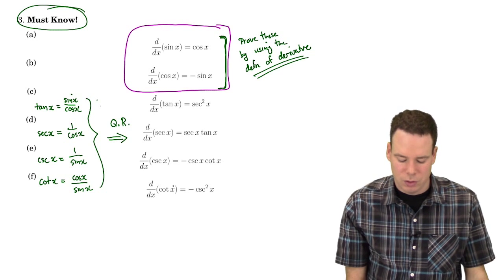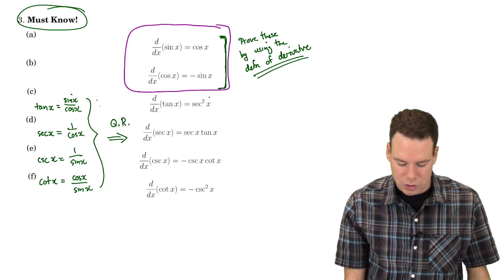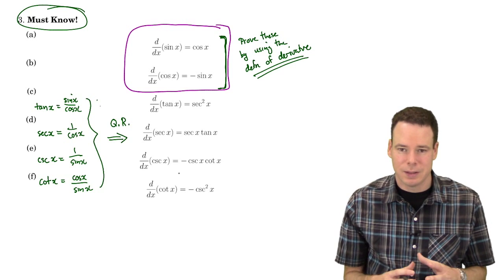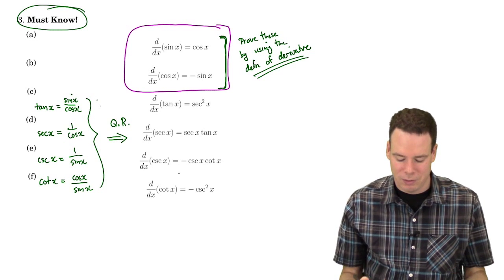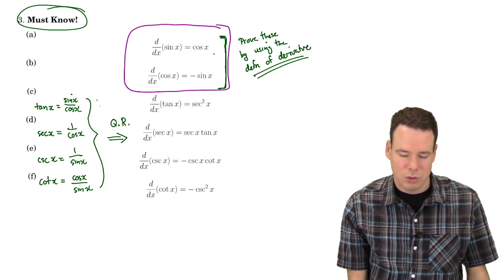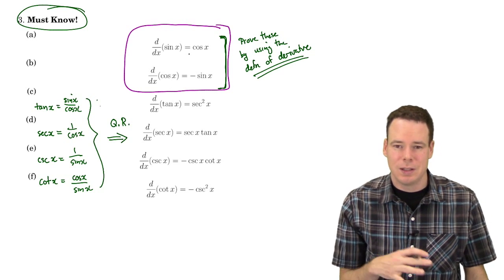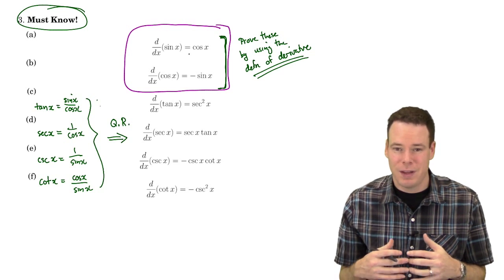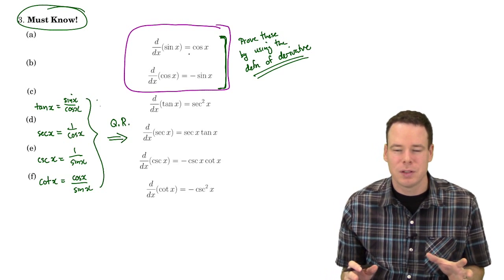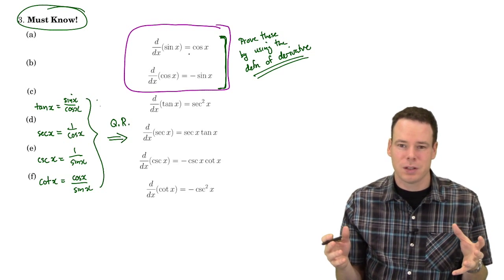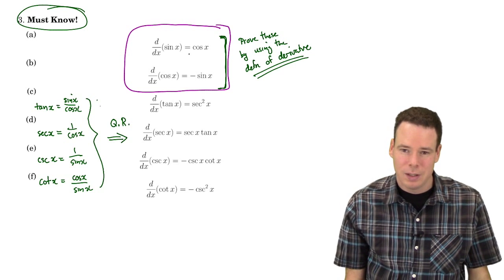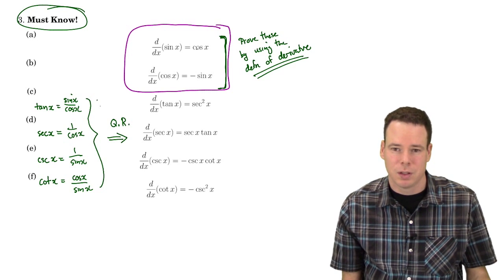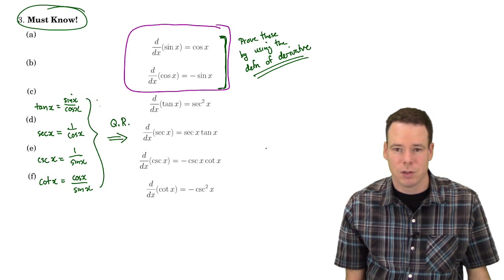You must know these derivatives. It's not just about memorizing a list of six derivatives in isolation — a lot of them have similarities. The derivatives of sine and cosine are the ones you absolutely must know. If you ever forget, you can sketch the graph of sine, draw the tangent lines, and see that it looks like the cosine function. That gives you a memory aid for why the derivative of sine is cosine, and you can do the same for cosine to get negative sine.